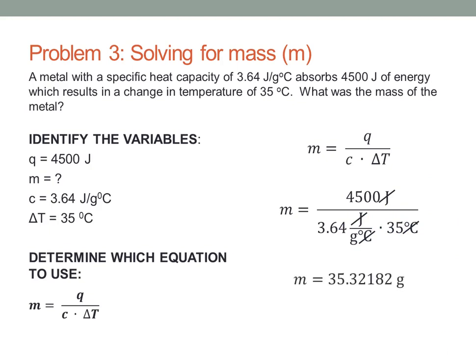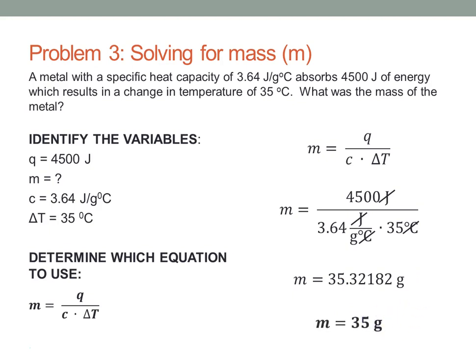Our mass comes out to 35.32182 grams. Consulting the problem, two of the numbers — 4500 and 35 — had only two significant digits. So we round to the second significant digit, which is the 5, giving us a mass of 35 grams.